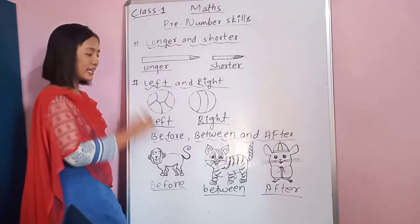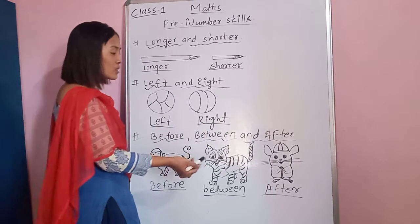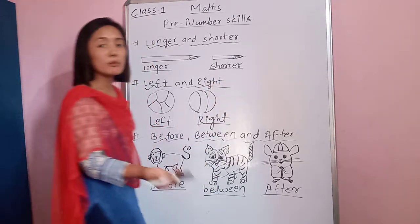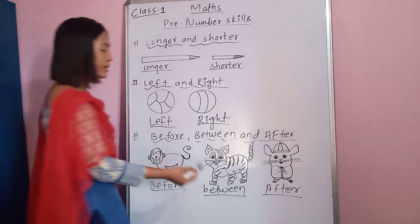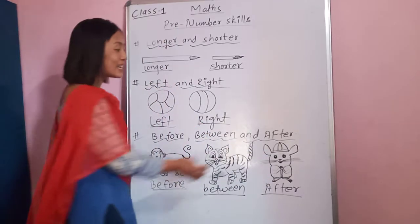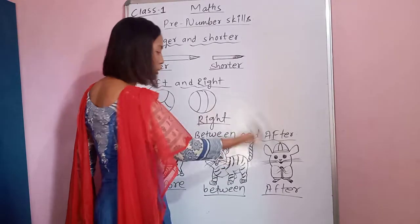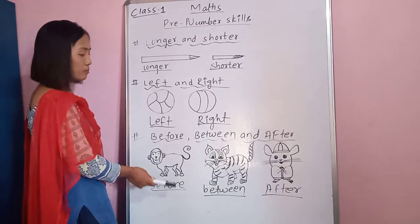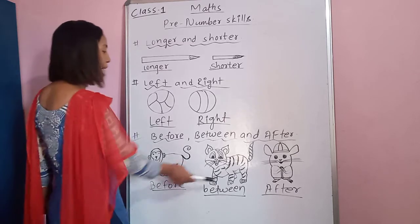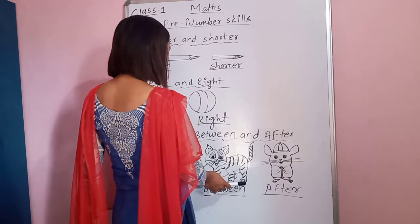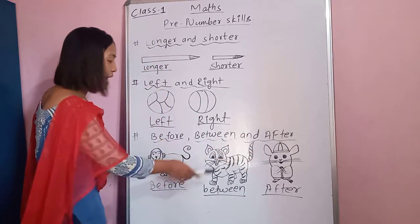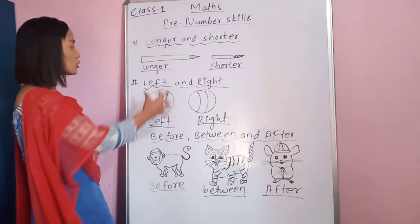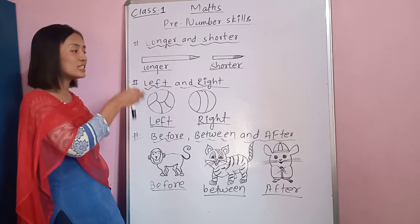If you are asked what animal is after the cat — the monkey is standing before the cat, and the rat is standing after the cat. The cat is obviously between the monkey and rat. So this is the topic of before, between and after.